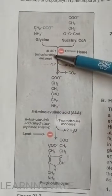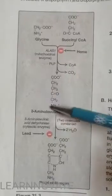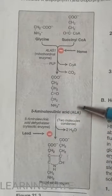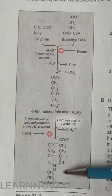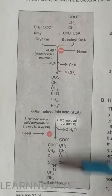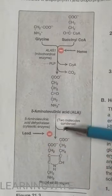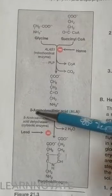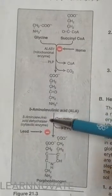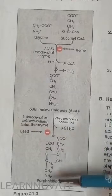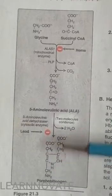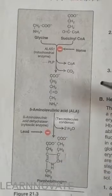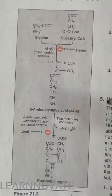This occurs because of the ALA synthase 1 enzyme. Then, after alpha-aminolevulinic acid has been formed, this ALA is converted into porphobilinogen. Porphobilinogen is formed from two molecules of ALA. When two molecules of ALA condense with the release of water, in the presence of ALA dehydratase — a cytosolic enzyme — porphobilinogen is formed, which is a precursor of porphyrin.